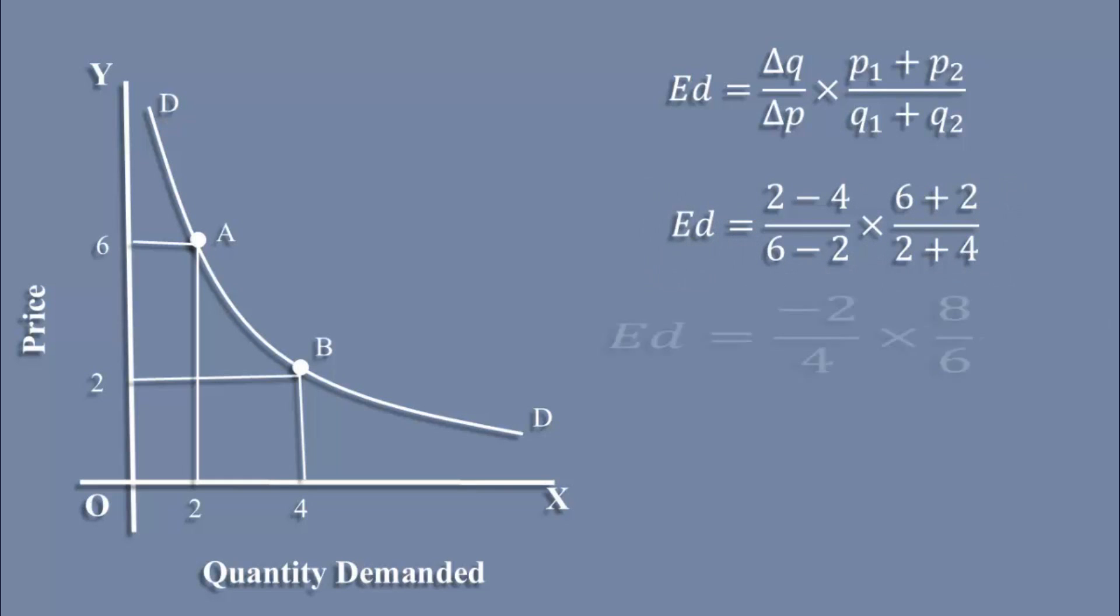On simplifying, we get minus 2 by 3. We take only the absolute value. Hence, the elasticity value is 2 by 3. It is less than 1. Demand is relatively inelastic.